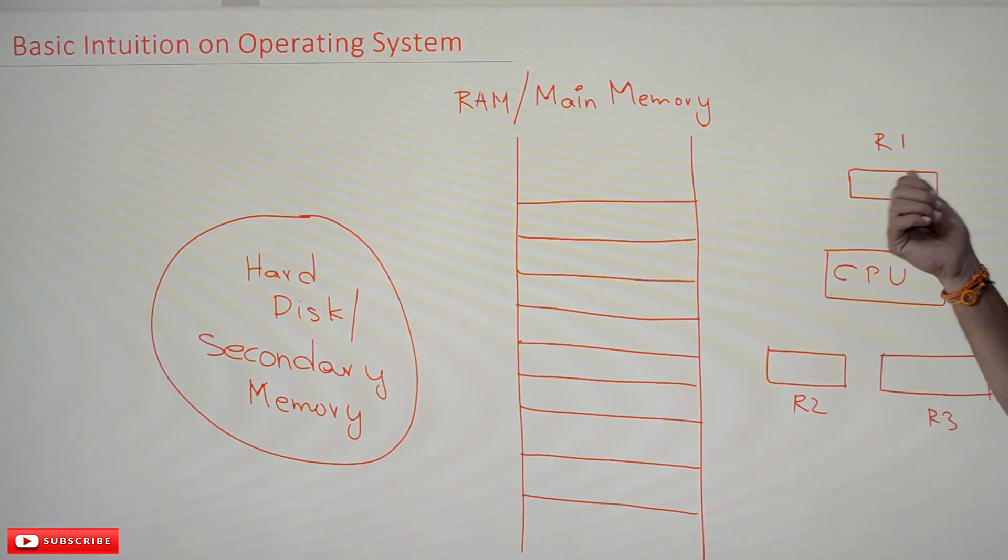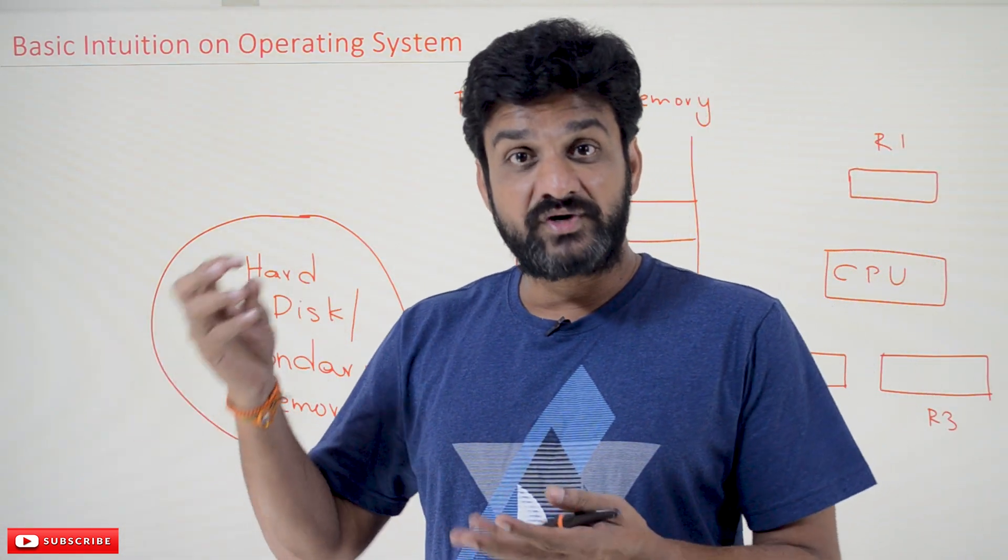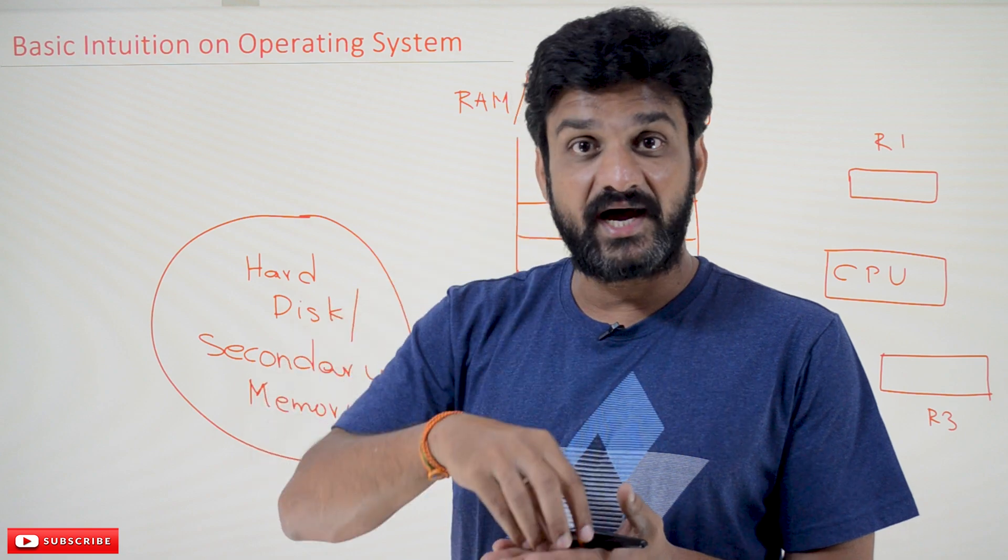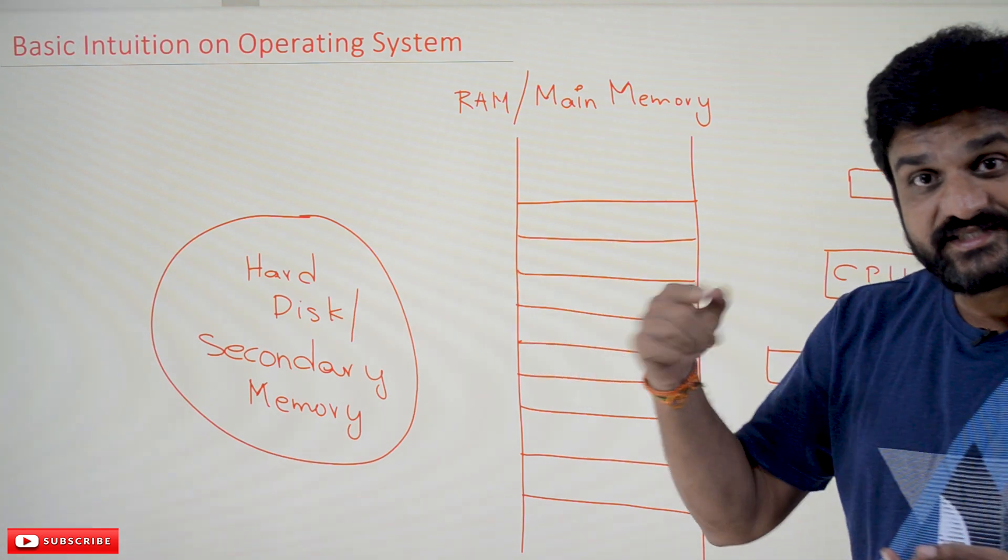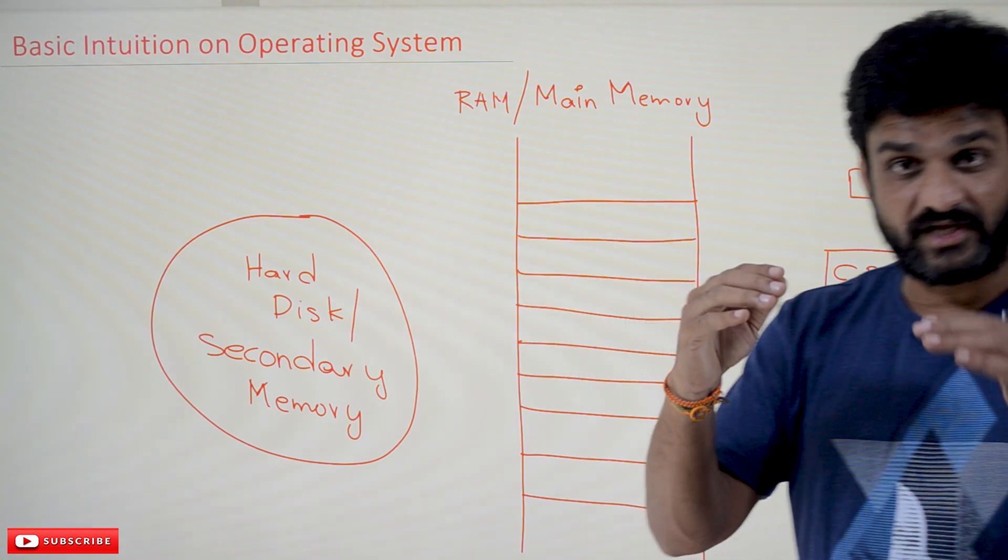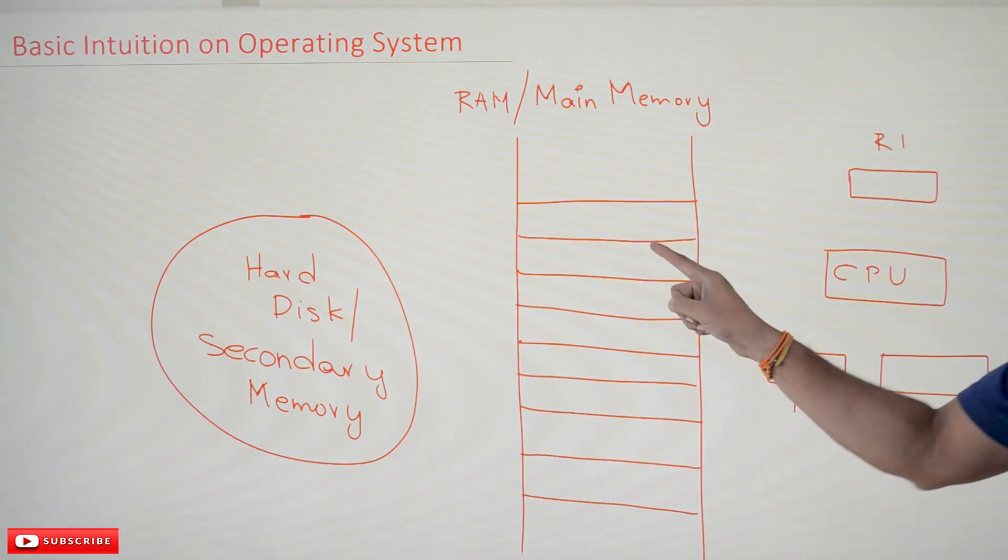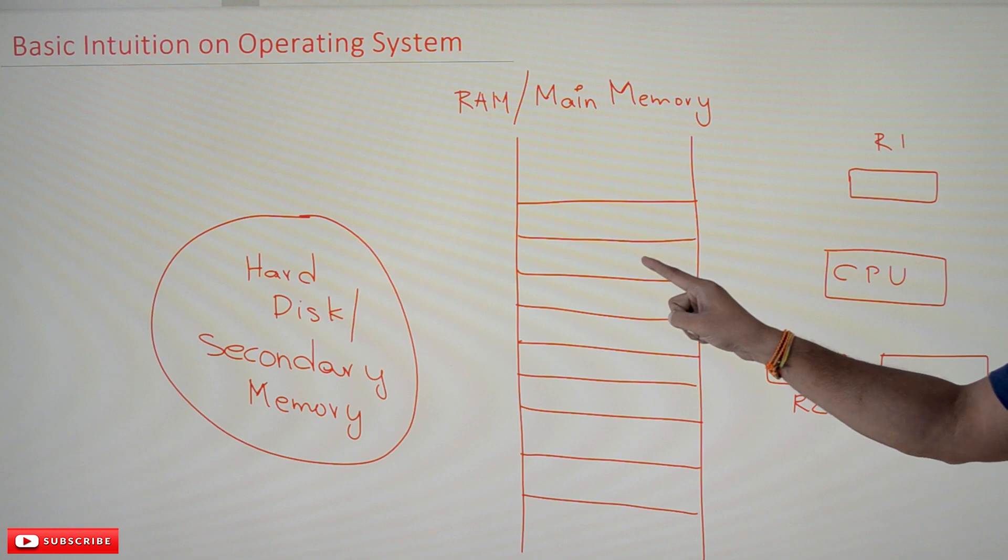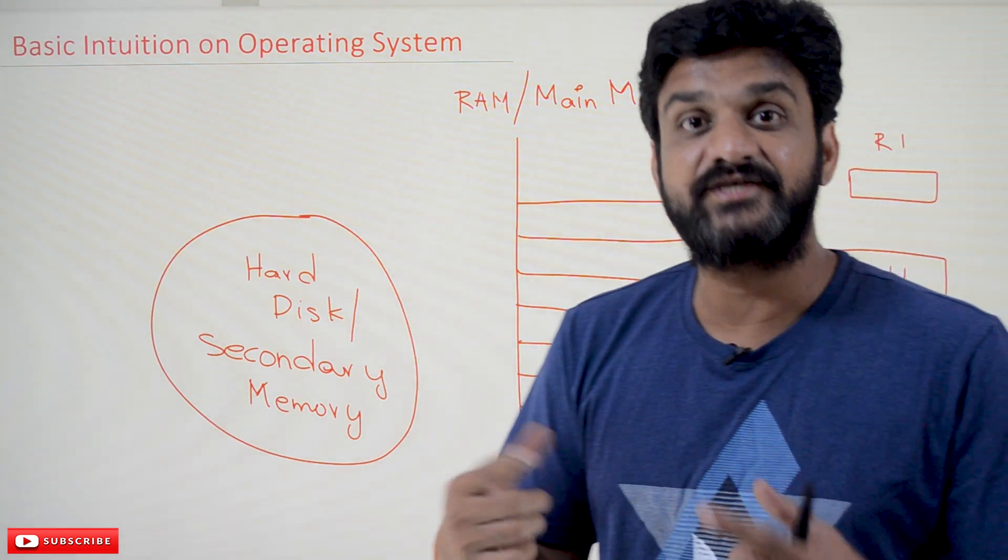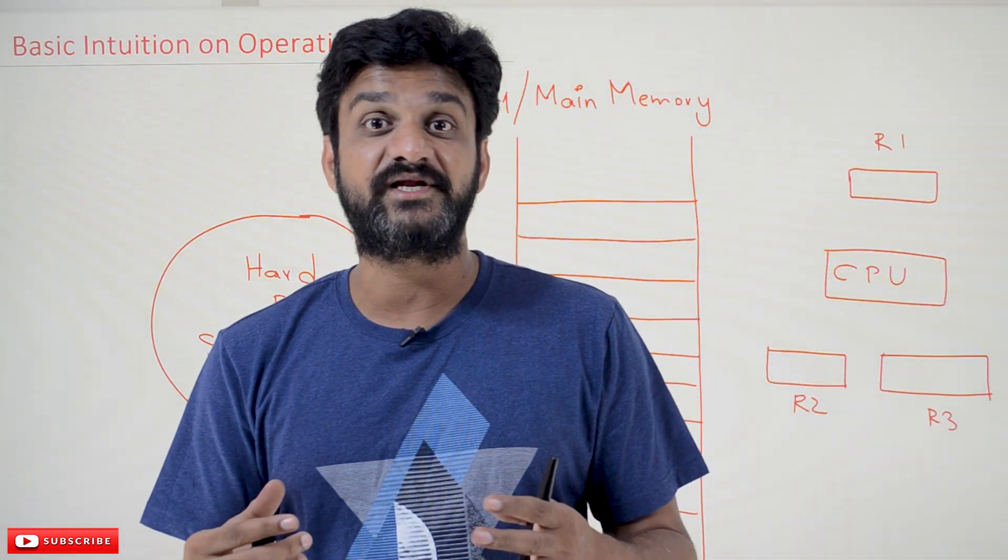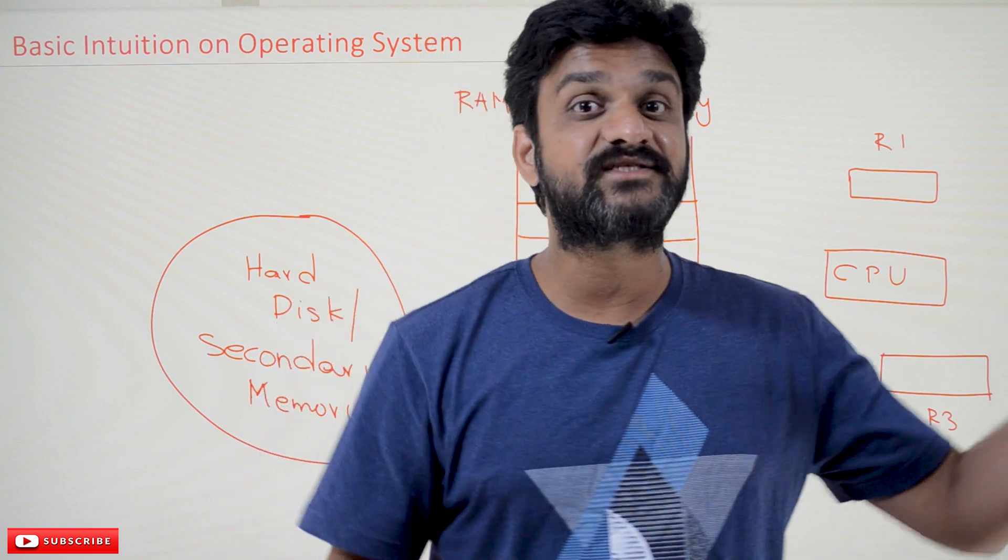So whenever we want to execute a program, the program that we have stored on the hard disk will be shifted from the hard disk to the RAM. Now from the RAM, instruction by instruction, the instructions that are there in the program will be shifted from the main memory to the CPU with the help of registers. The instructions will get executed. This kind of explanation about the hardware, how the instructions will get executed, this concept we have already discussed in our computer organization course.